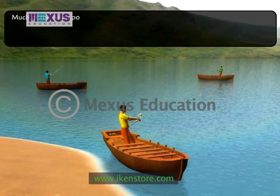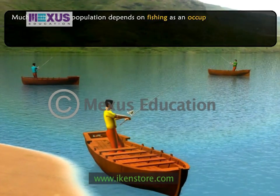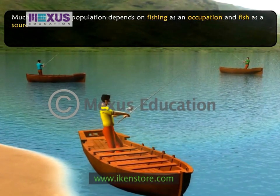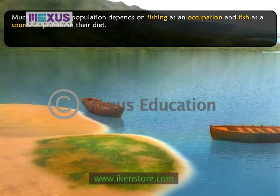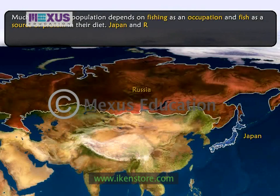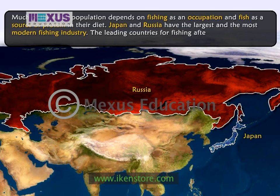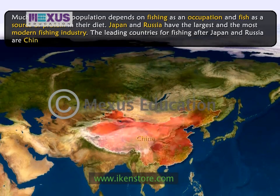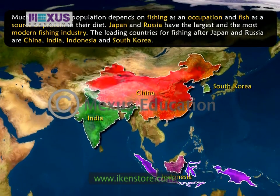Much of the Asian population depends on fishing as an occupation and fish as a source of protein in their diet. Most of the fishing is done in traditional boats. Japan and Russia have the largest and most modern fishing industries. The leading countries for fishing after Japan and Russia are China, India, Indonesia and South Korea.